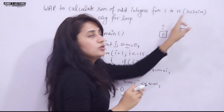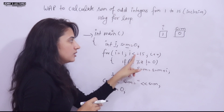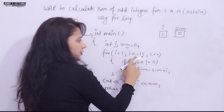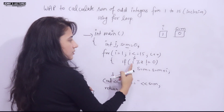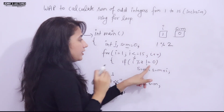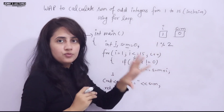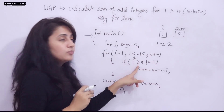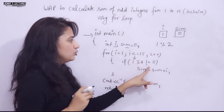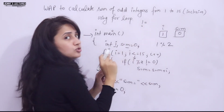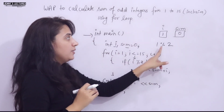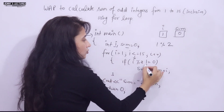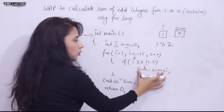The for loop starts: i is initialized to 1. Condition check: 1 <= 15 — true, so control enters the loop. Now check: 1 % 2 != 0. Since 1 divided by 2 gives remainder 1, which is not equal to 0, the condition is true — meaning 1 is odd.